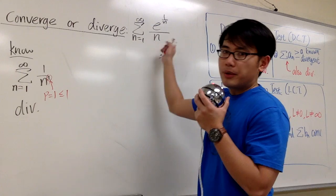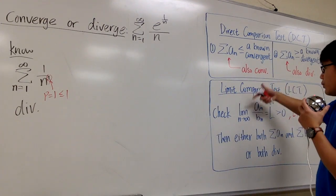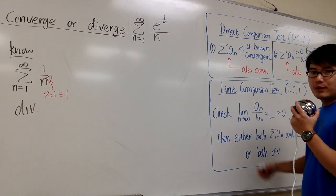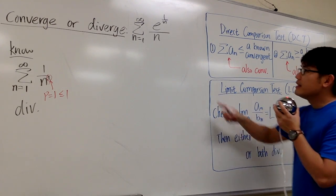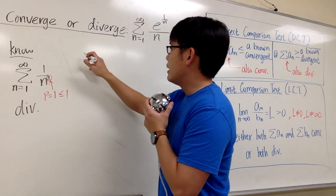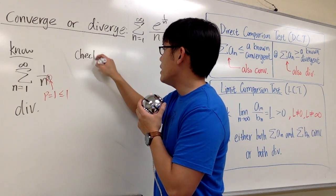How are we going to make the comparisons? We have two choices. Let's use the limit comparison test and check the limit. a_n is the original, and b_n is something we know better.